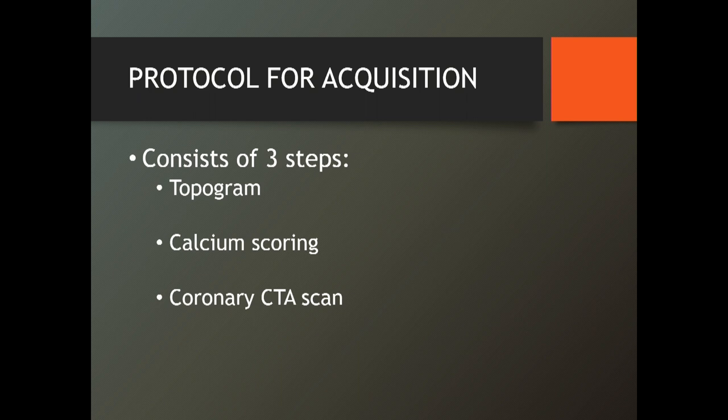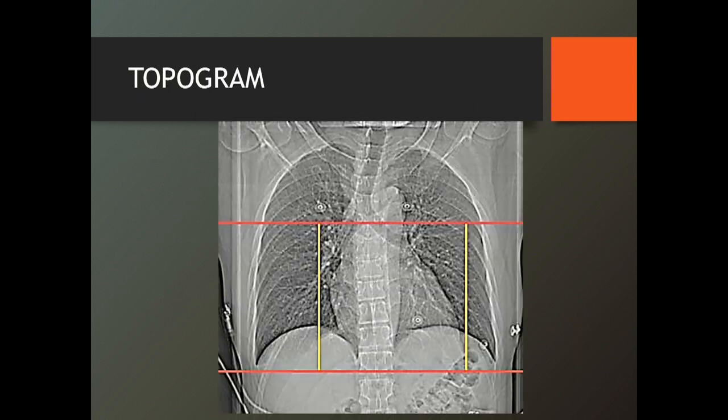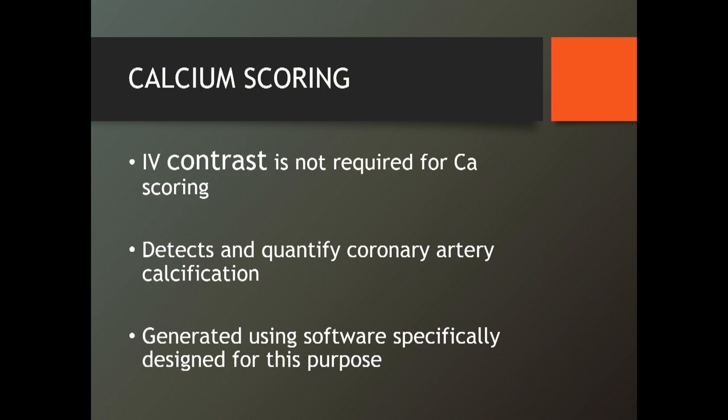The standard three-step protocol: first do the topogram — use it like a chest x-ray to find anything obviously wrong. Then do calcium scoring in every individual — it doesn't need contrast and will detect and quantify coronary artery calcification. The scoring is generated automatically using software. And then do the coronary CT angiogram.